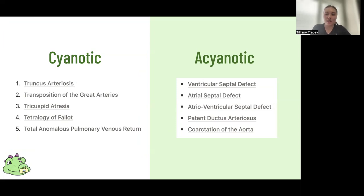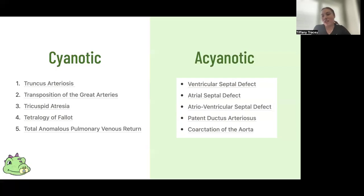You can remember the main cyanotic heart diseases with a numbering system one to five. One for truncus arteriosus — only one great vessel leaving the heart. Two for transposition of the great arteries — two great arteries but in a different position. Three for tricuspid atresia. Four for tetralogy of Fallot — four defects make up the condition. Five for total anomalous pulmonary venous return, which has five words. The main ones to know are two and four.